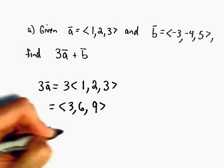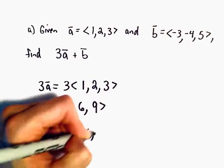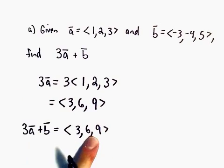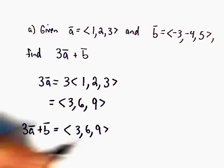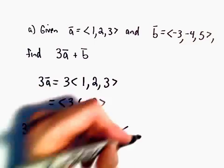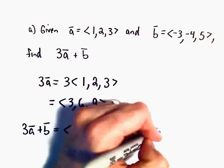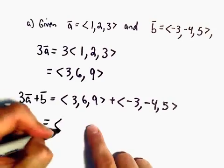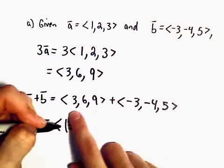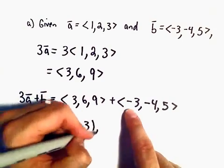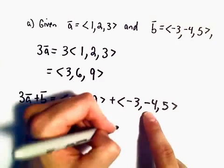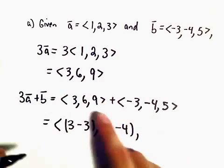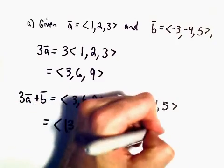When we do 3A plus B, well, we'll take our vector 3, 6, 9, that's our 3A. We'll add to that vector B, which is negative 3, negative 4, and positive 5. And to add these, we just add respective components. So we'd have 3 plus negative 3, we would have 6 plus negative 4, and then we would have 9 plus 5.